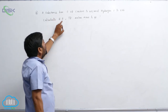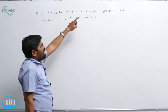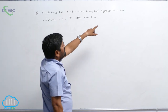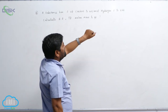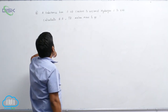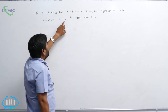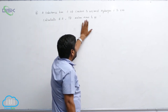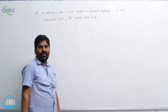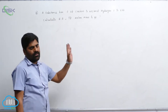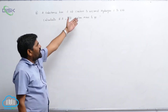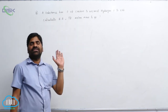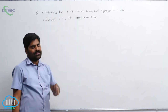A substance has a percentage of carbon of 40%, hydrogen is 6.66%. Calculate the empirical formula if the molar mass is 90. The remaining percentage — 100 minus 40 plus 6.66 — is oxygen.